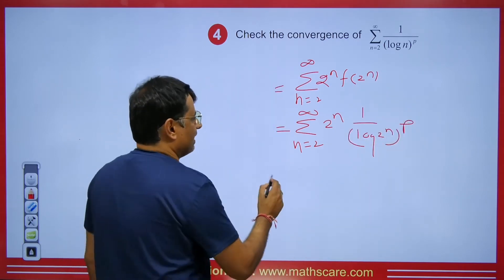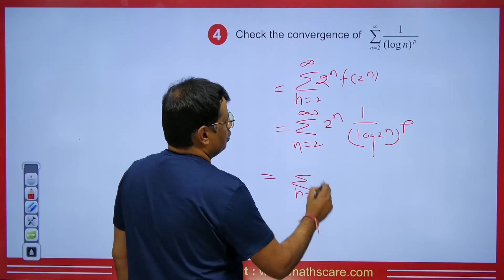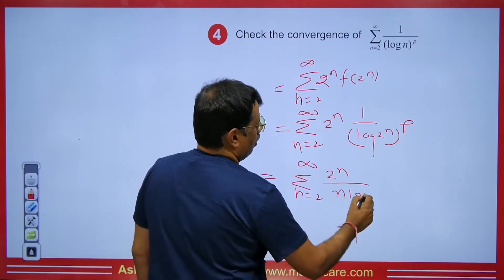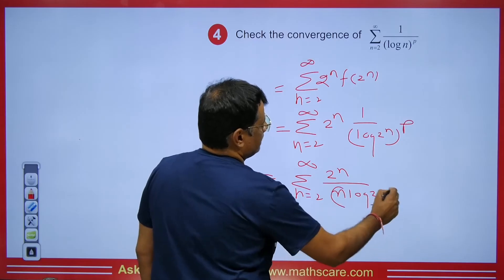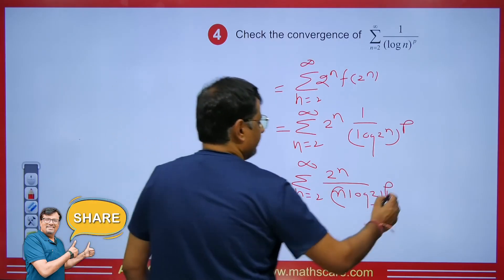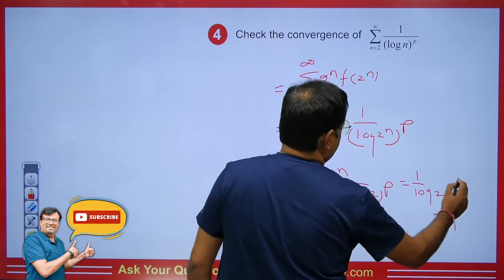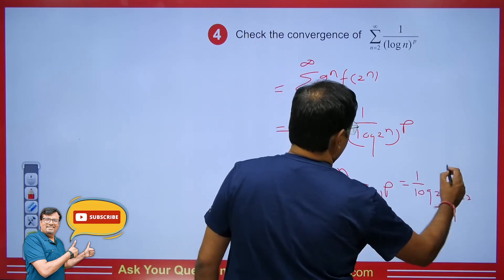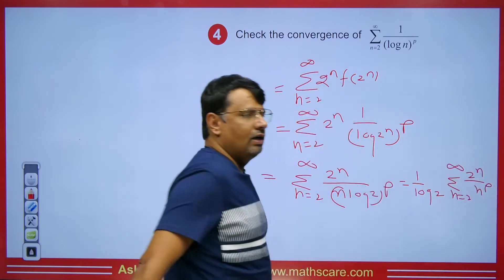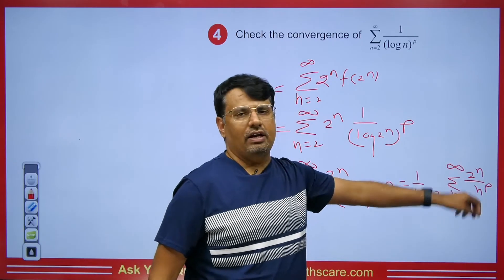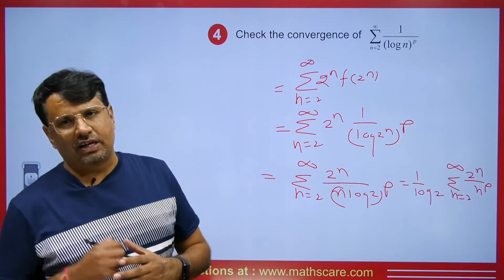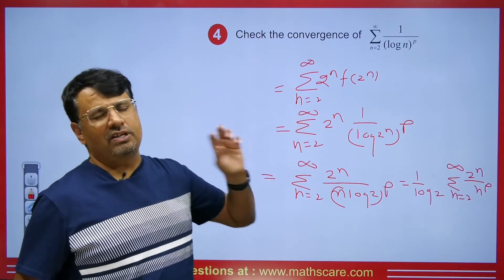So we can clearly see what we get: summation n = 2 to infinity of 2^n upon (n log 2)^p. Taking out log 2, we get (1/log 2)^p times summation n = 2 to infinity of 2^n / n^p. This is our u_n. Now we are going to use the u_{n+1} / u_n test, known as the D'Alembert Ratio Test, to check for which value of p this will be convergent.